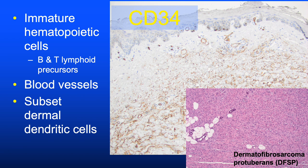CD34 is classically the marker used to confirm dermatofibrosarcoma protuberans (DFSP), but it wears many hats in pathology. For dermatopathologists, there is a whole differential diagnosis of CD34-positive spindle cell tumors. CD34 is also a marker for immature hematopoietic cells in myeloid leukemias, a vascular marker for blood vessels, and labels dermal spindle cells—presumably dermal dendritic cells.